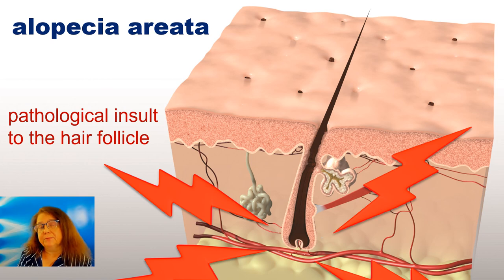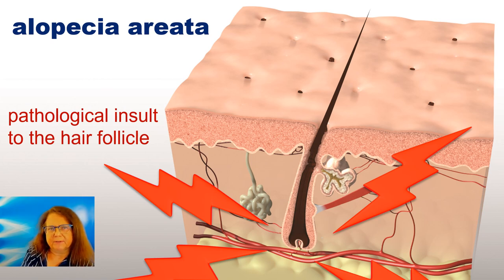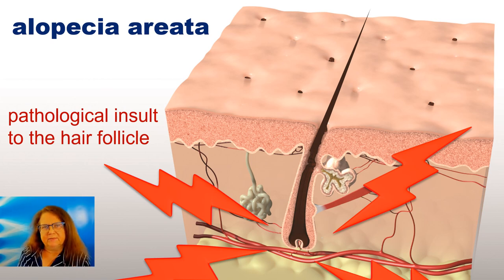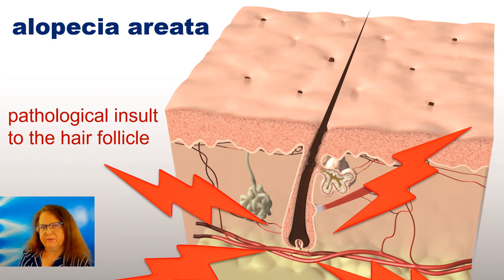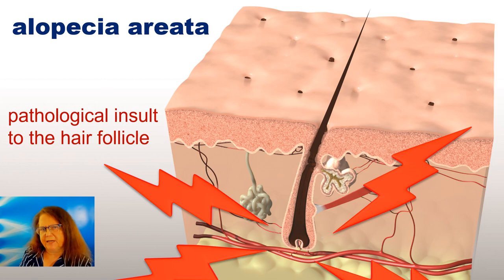Let's begin with this example of a hair follicle in a patient with alopecia areata. It is usually surrounded by an inflammatory infiltrate, and this inflammatory infiltrate has a significant impact on the hair follicle and it affects the growth of the hair shaft.